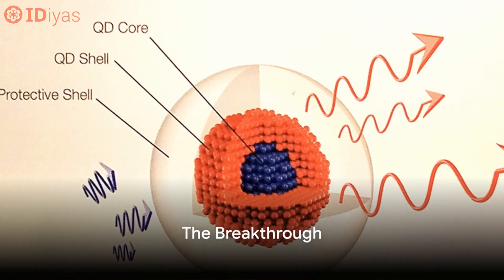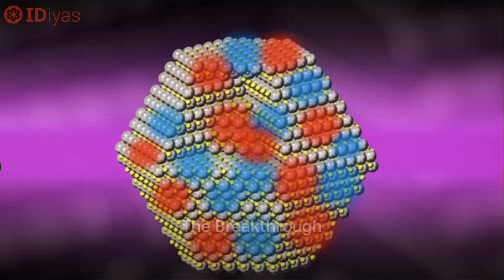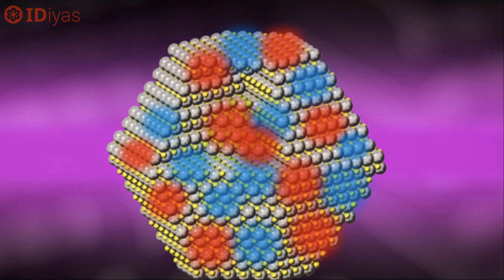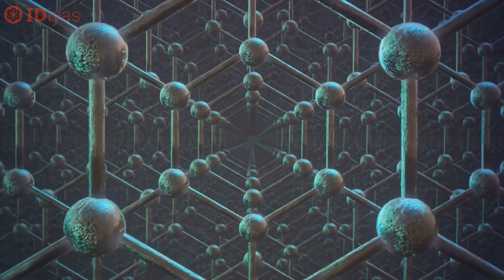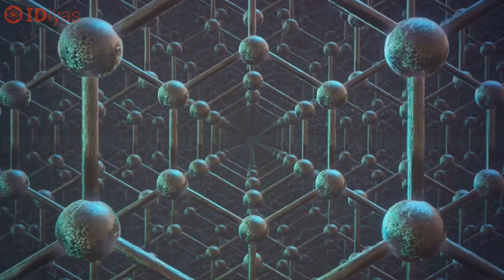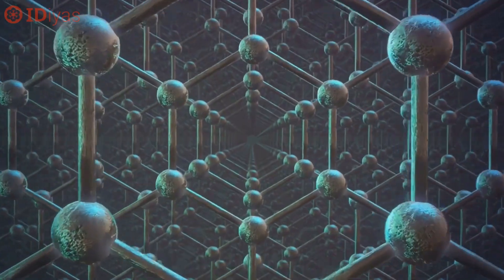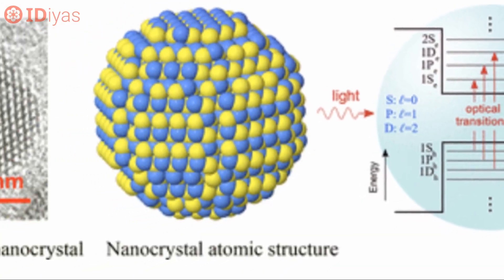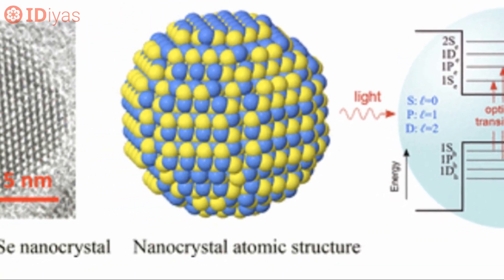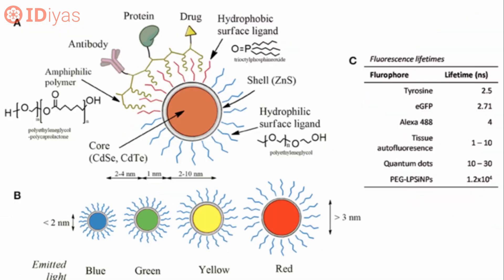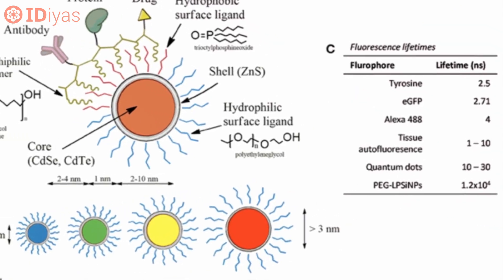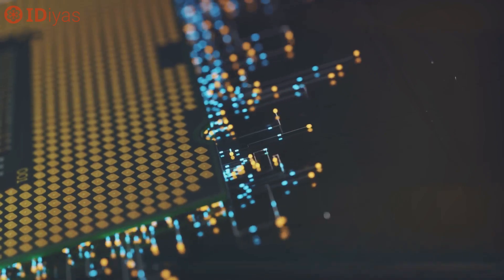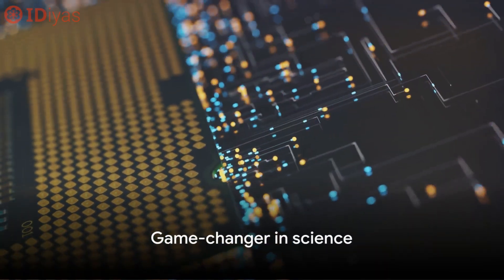Enter Mungi Barwendi, the scientist who made quantum dots more than just a scientific curiosity. In the early 90s, Barwendi took on the challenge of these unpredictable particles. He developed a method that allowed for the production of nearly perfect quantum dots, with precise control over their size and surface characteristics. This was an absolute game-changer.